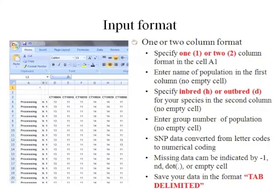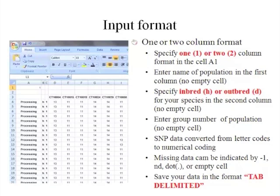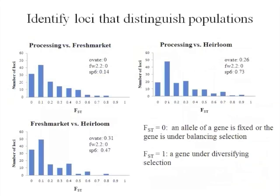There is an example of the one-column format. For both options, you need three columns for the name of the population, the mating type, and group number of the population. Don't leave any single cell empty in these three columns. For mating type, specify inbred or outbred for your species. MSA doesn't accept letter coding, so if you score your SNP marker data using A, T, C, G, you need to convert that letter coding to numerical coding. Missing data can be indicated by several ways, including negative one. Finally, save your data as tab-delimited text.